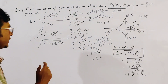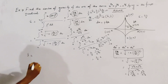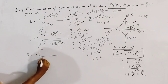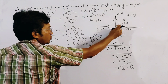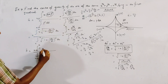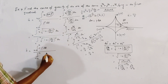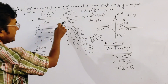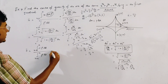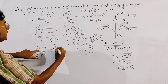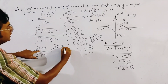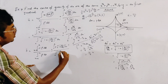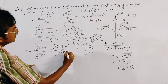Now for ȳ, we write ȳ = integration from 0 to a of y·ds divided by integration from 0 to a of ds. Here we write the distance y times the mass element ρ·ds in the numerator, and only the mass element ρ·ds in the denominator. ρ cancels out, and similarly we reach ȳ = integration from 0 to a of y·√(1 + (dy/dx)²) dx divided by integration from 0 to a of √(1 + (dy/dx)²) dx.